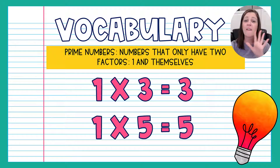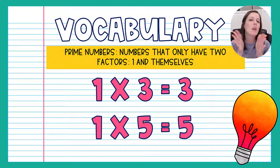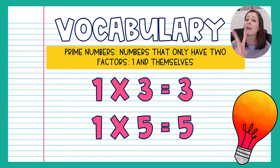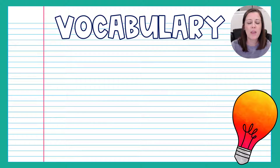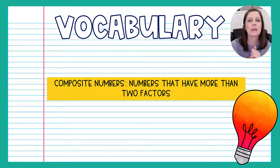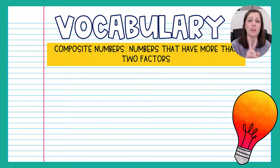Another example is five. The only two things you can multiply together to get five are one and five, so that makes it a prime number. So: factors are numbers we can multiply together to get another number, and when you only have two factors, that means it's a prime number. Our third and final vocabulary word is composite numbers. Prime numbers only have two factors; every other number is a composite number — they have more than two factors.